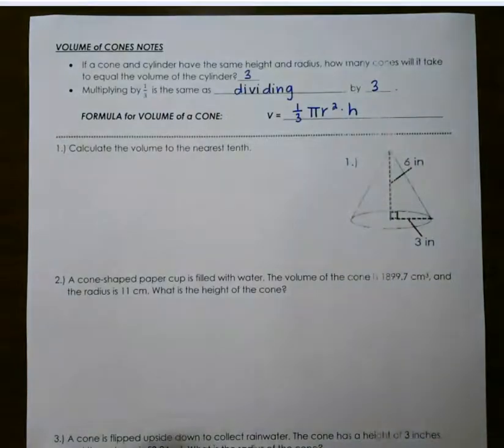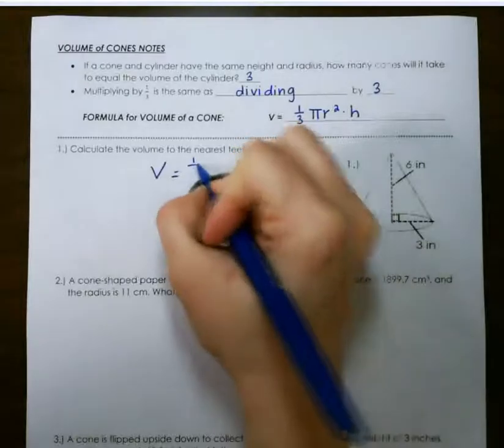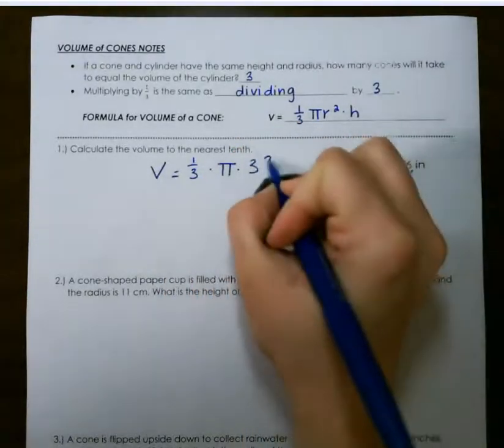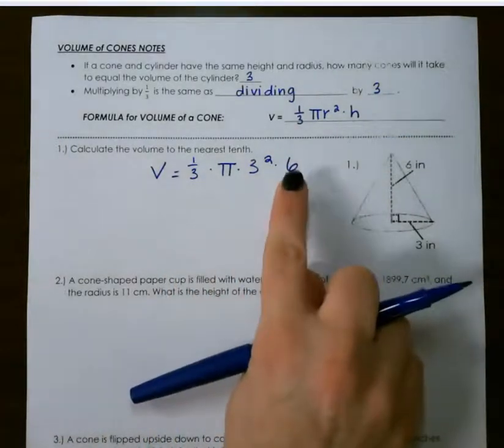So let's look at our first example. Volume equals 1 third times pi, our radius is 3, and our height is 6. So we just want to simply multiply each of these.